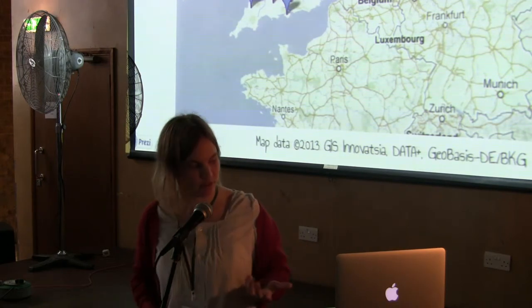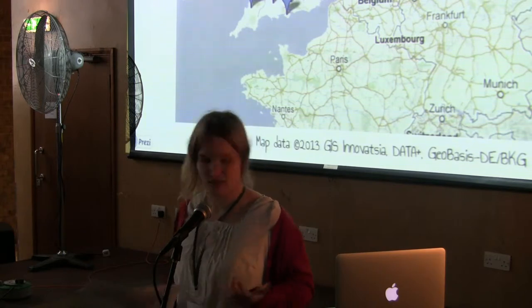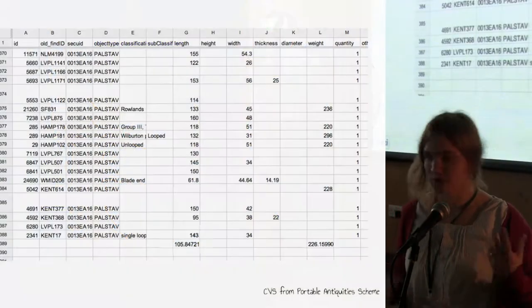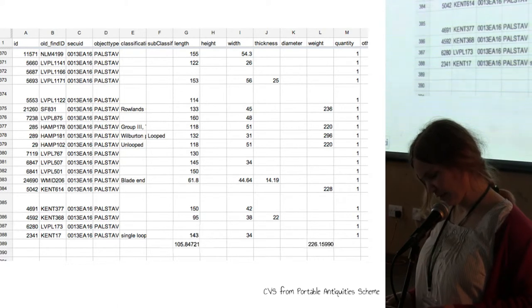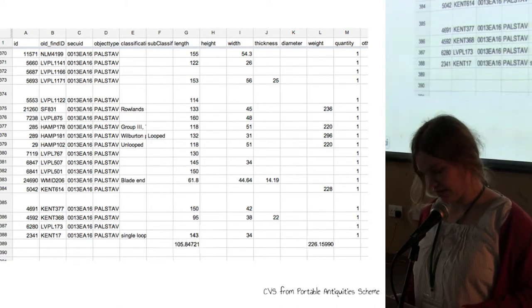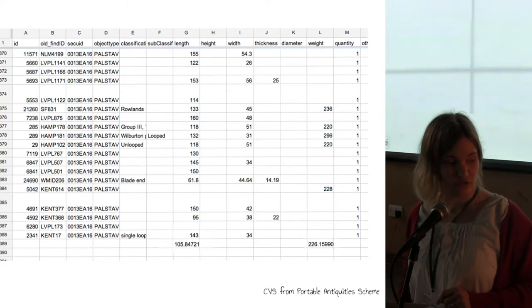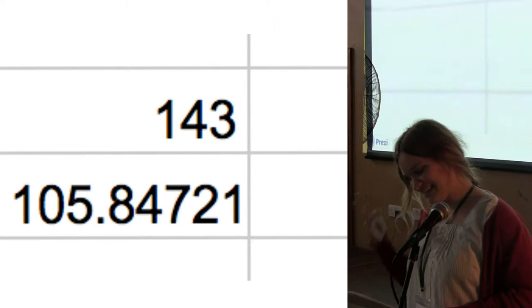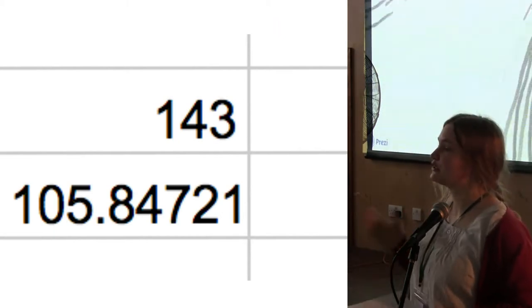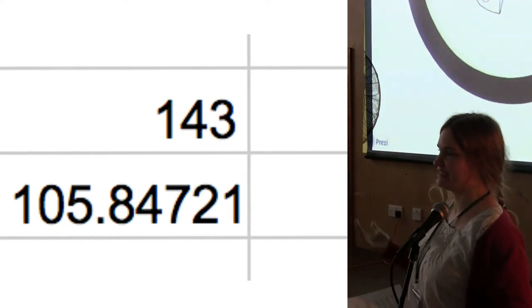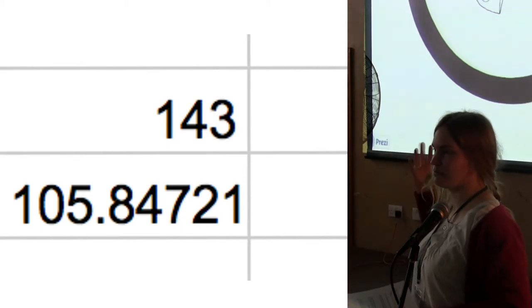What else could I do with the data? The Portable Antiquities Scheme allowed me to download the CSV file, which I put into my favourite spreadsheet program to do some basic calculations. For example, the average weight of the palstave was 226 grams, and the average length is around 10 centimeters. At this point I'd like to think about how wonderful it could have been if I had been able to access this sort of data across Europe with many different datasets, and how easily I could have researched this subject more thoroughly.